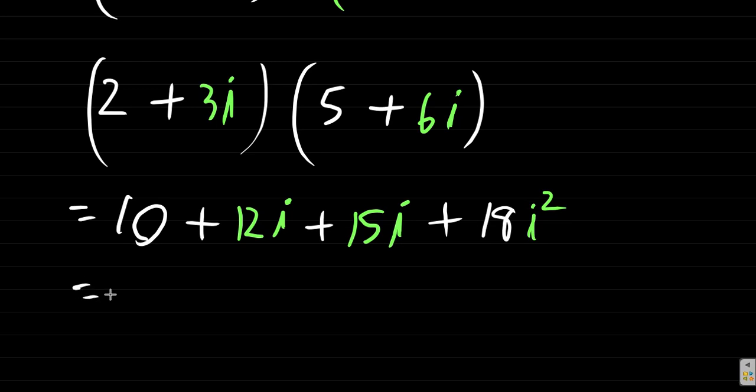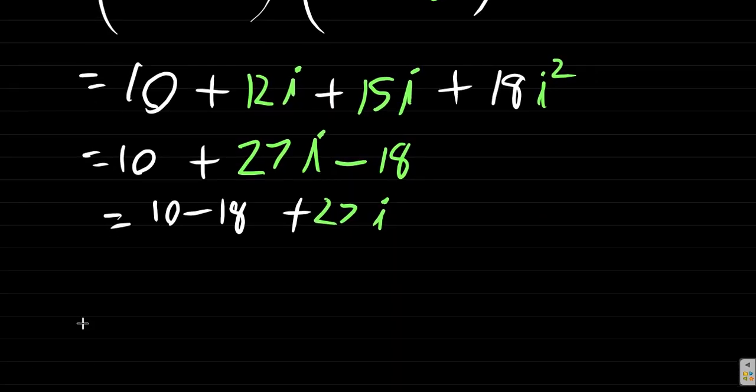So what you have is 10 plus 12 plus 15 is going to be 27i minus 18, minus 18 because i squared is negative one. So what you have there is 10 minus 18 plus 27i. So this is equal to negative eight plus 27i. Is that what you got?